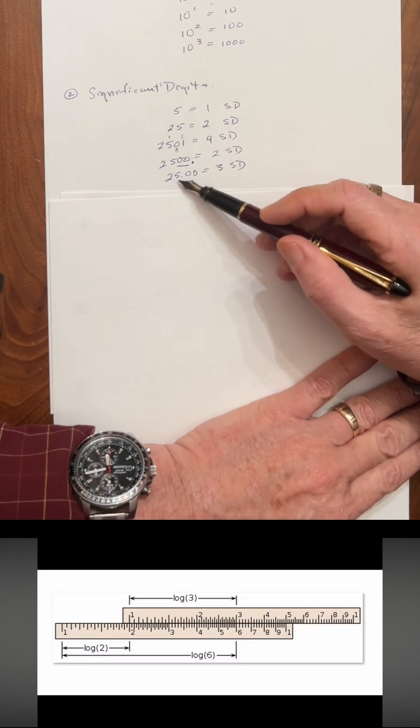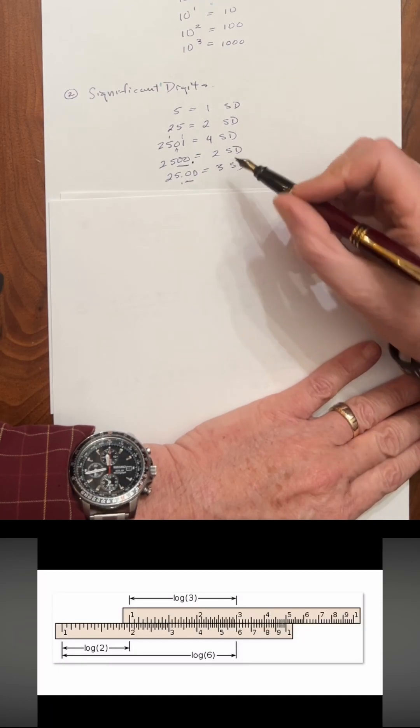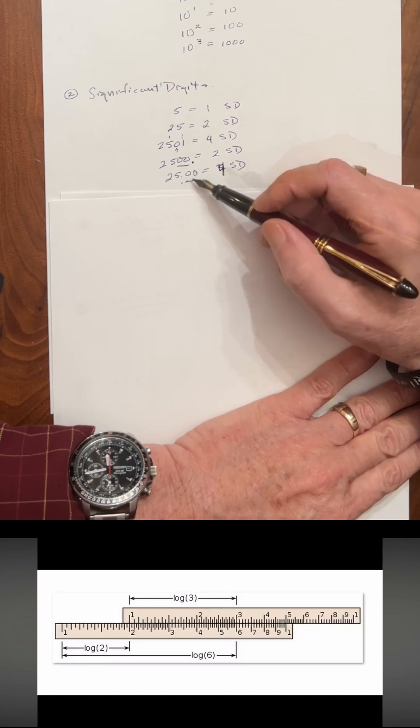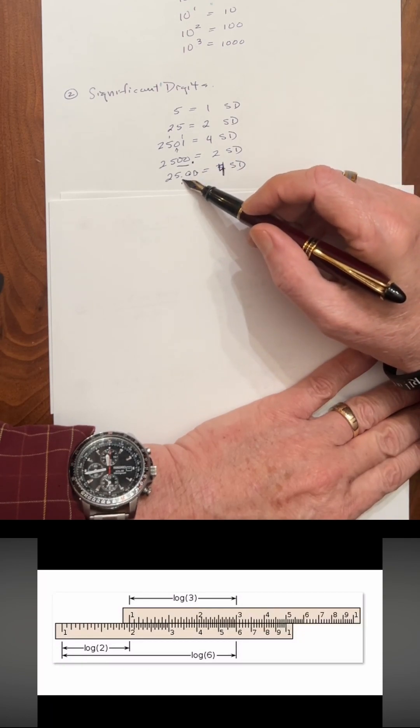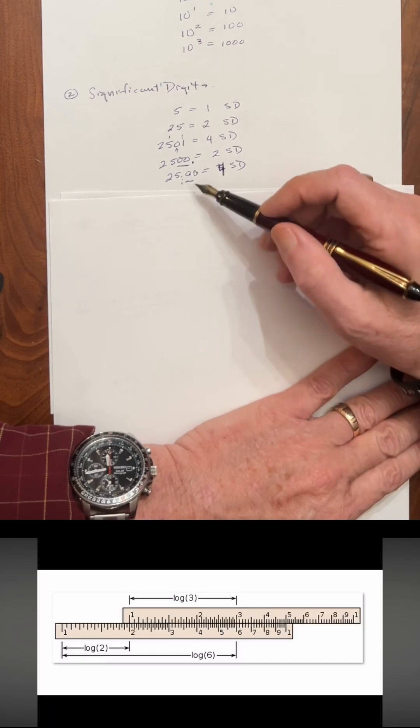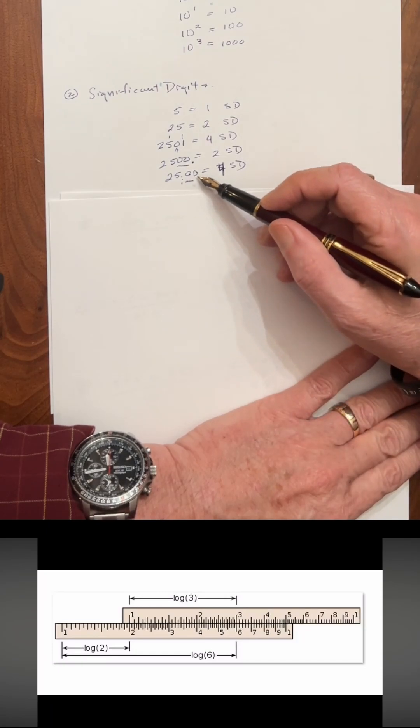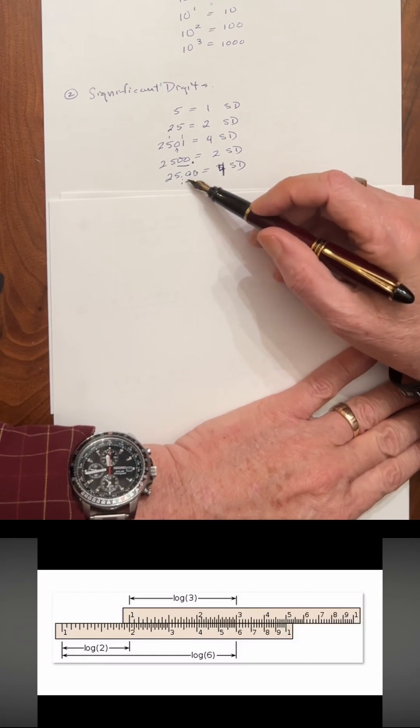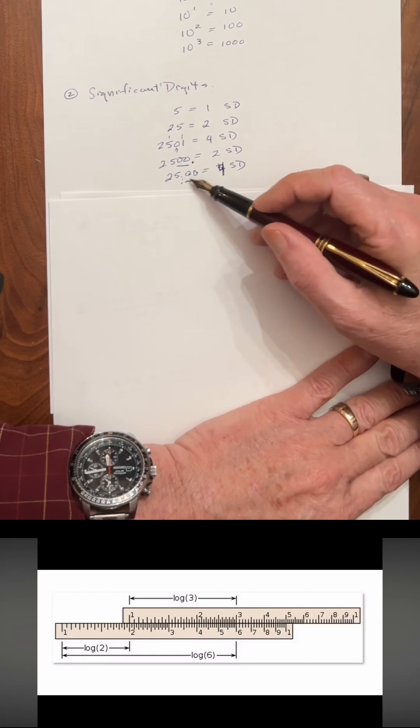However, 25.00 has got four significant digits because these zeros to the right of the decimal point are significant because the implication is that you could measure to the 1/100th of a unit. And when you did that, you measured zero. That's why they're there.